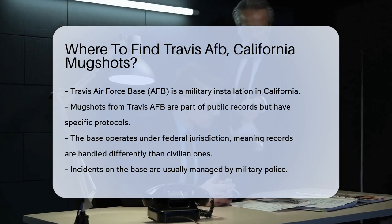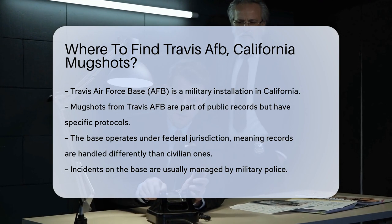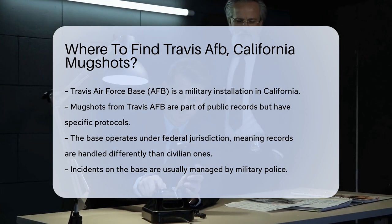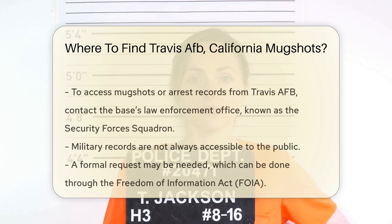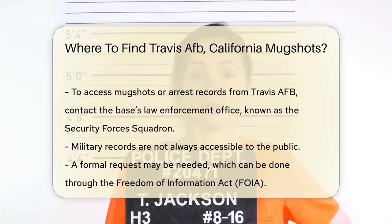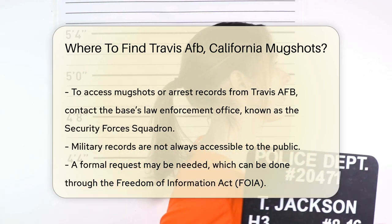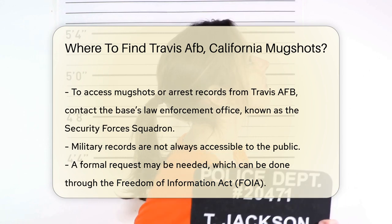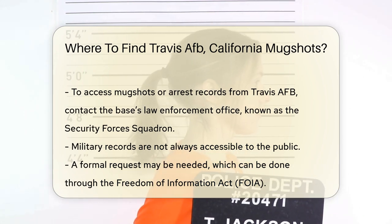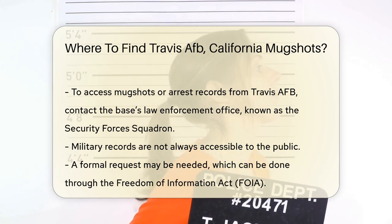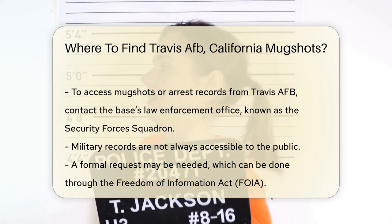If an incident occurs on the base, it is usually managed by military police. To access mugshots or arrest records from Travis AFB, you'll need to contact the base's law enforcement office. This is often referred to as the Security Forces Squadron, and they handle all law enforcement activities on the base.